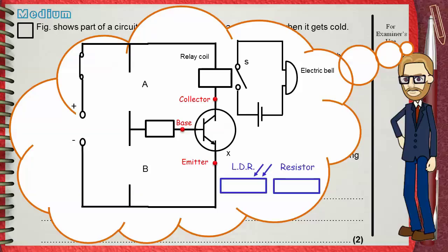If you want an alarm when light intensity increases, you put the LDR in Gap A between the base and the collector and put your resistor in Gap B between the base and the emitter.